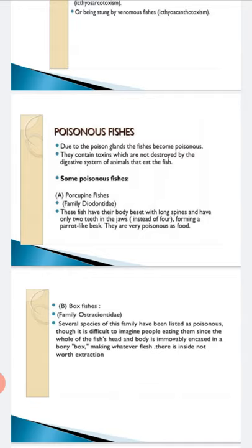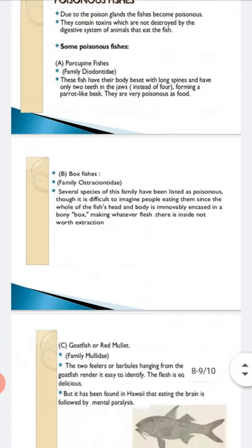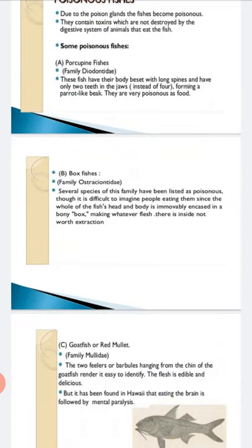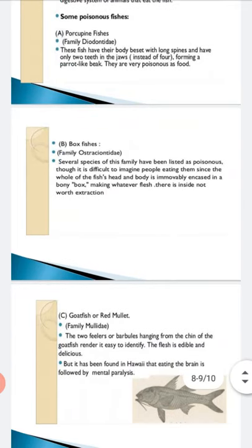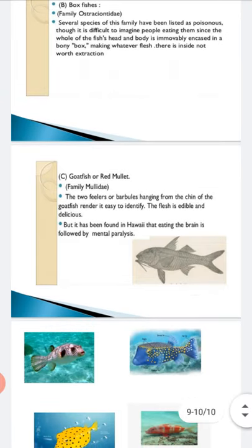The box fish has a box-like structure on the head which contains a venom. The third example is the goat fish. Here in the diagram you can see the red mullet, which has two feelers — barbels also coming out. It has been found in Hawaii that eating the brain of this fish causes mental paralysis. The fish itself is not poisonous, but the brain is poisonous.